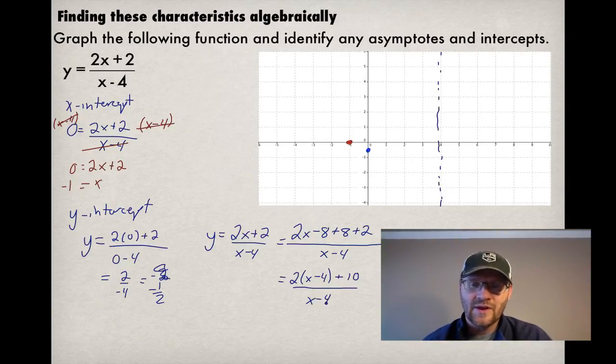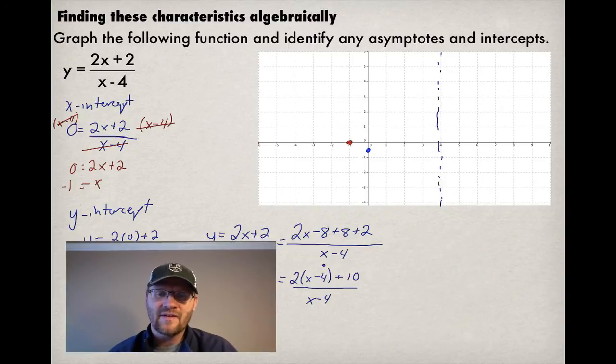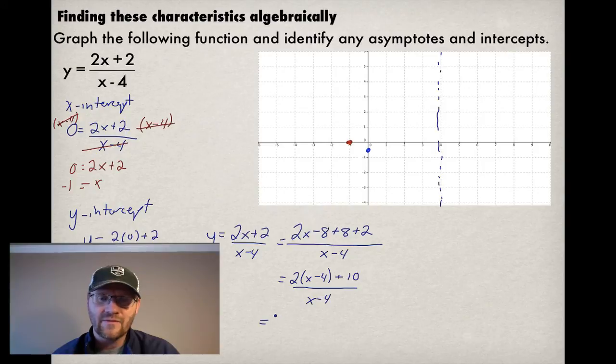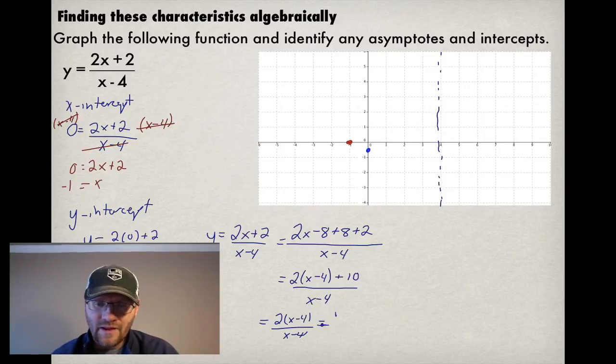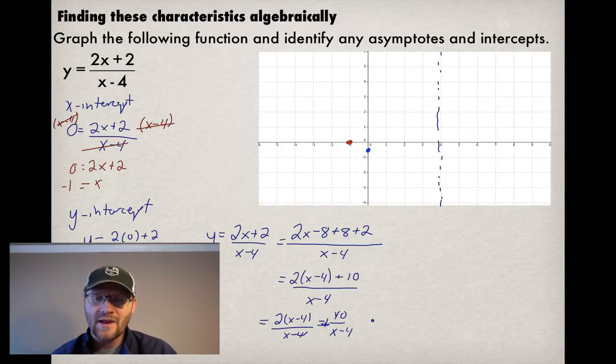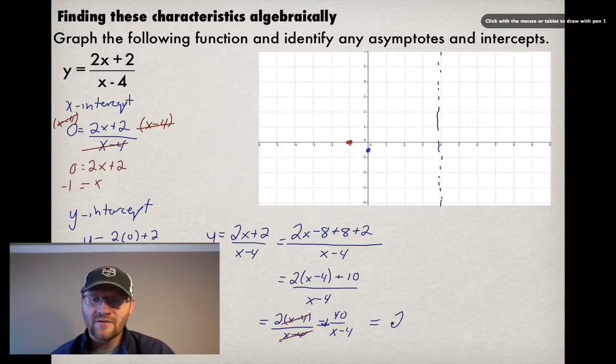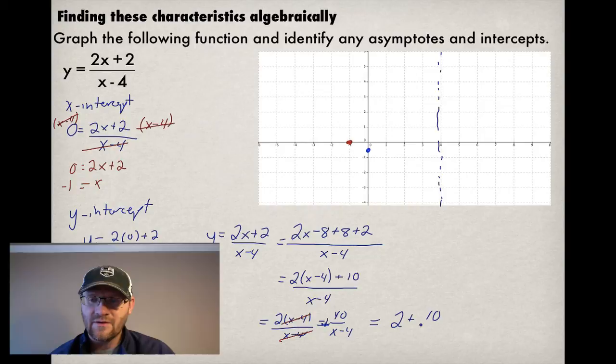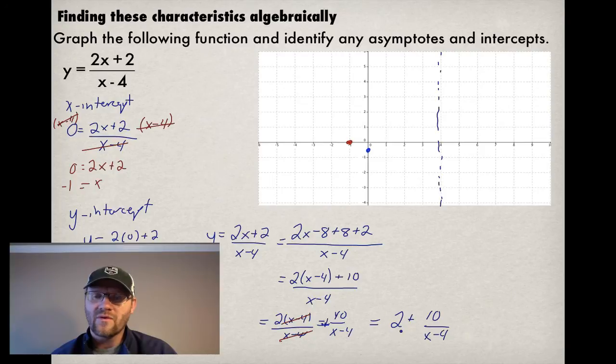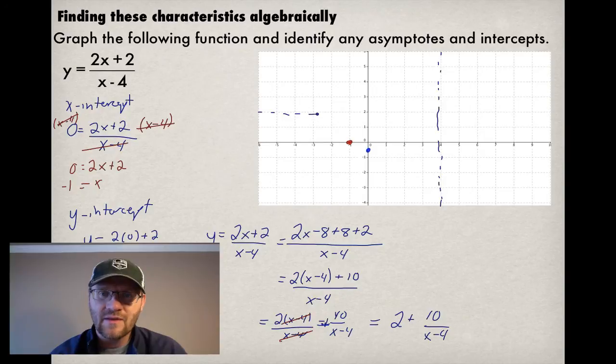Now the next thing I'm going to do algebraically is I can take both terms in the top, the 2 times x minus 4 and the 10. I can divide those both by x minus 4. So I get 2 times x minus 4 divided by x minus 4. And I can do, plus, sorry, 10 divided by x minus 4. So what I end up getting, it's a little messy, but these x minus 4s actually cancel each other out. And so what I end up getting is 2 plus 10 over x minus 4. So this just says that our horizontal asymptote is at x equals 2. Because that has been the vertical shift.